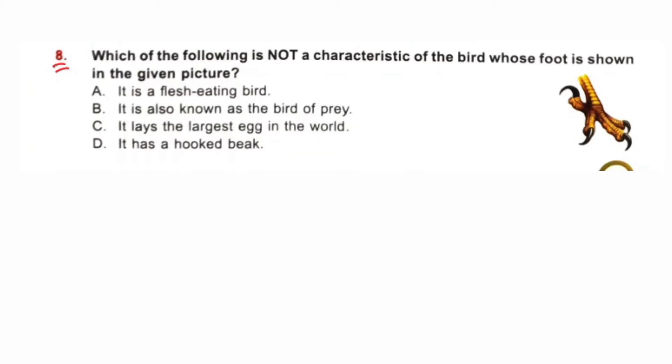Question number 8. Which of the following is not a characteristic of the bird whose foot is shown in the given picture? This is foot of flesh-eating bird, for example Eagle. They have three toes pointing forward and one toe pointing backward. Their claws are also called talons. They are also called preying birds. So, all options are correct except C. It lays the largest egg in the world which is ostrich. Ostrich is not a preying bird.